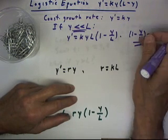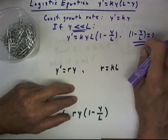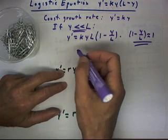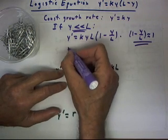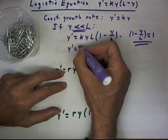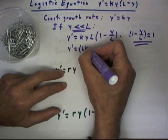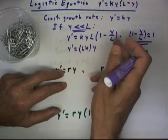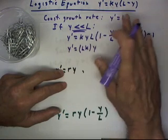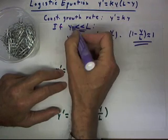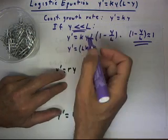If y is much less than L, then y/L is a small fraction and it's close to 1. In this case, we can write y' = kL times y. And this being close to 1, we can just leave it off. Again, this only applies if y is much less than L.